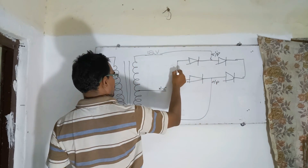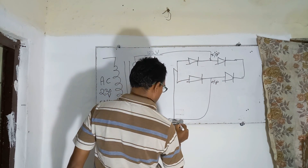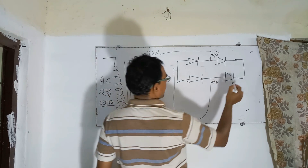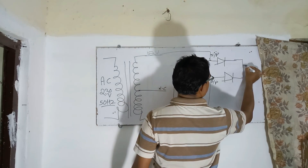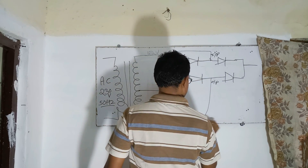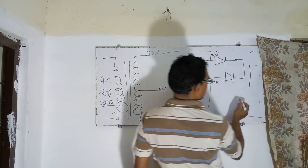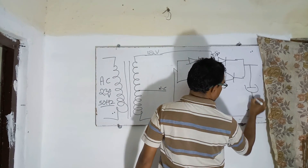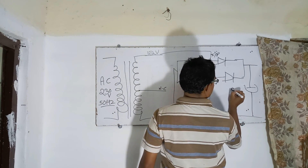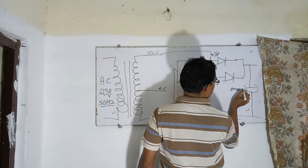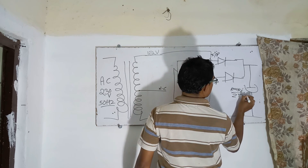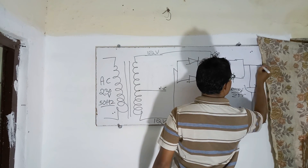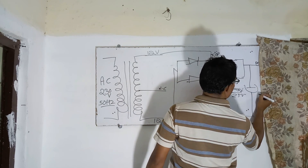I will take the output of the negative — zero volts. And I will take positive, this plus. After that I will add an electrolytic capacitor, 1000 microfarad 25 volts. After this is the DC output.